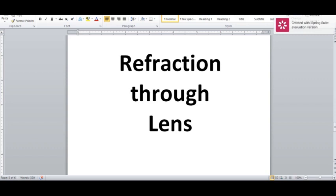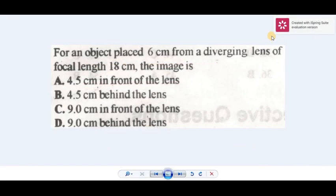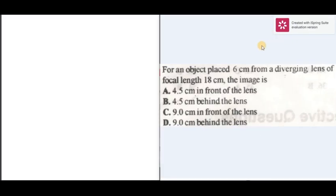Refraction through lens. For an object placed 6cm from a diverging lens of focal length 18cm, the image is one of these options. We'll find the answer.